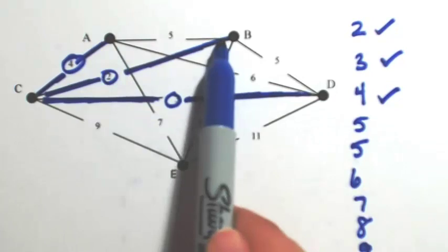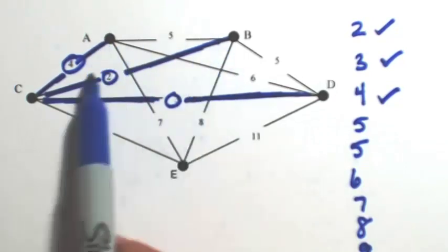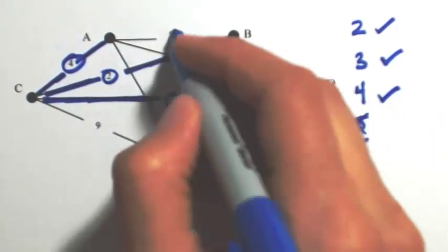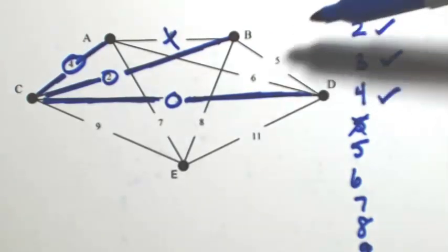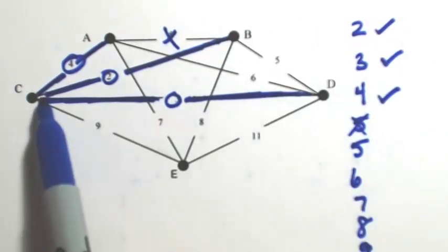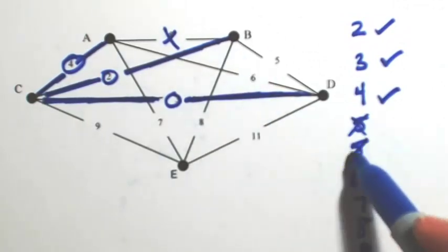We got a couple of 5s. If I use the 5 at the top, that's going to close out a circuit between A, B, and C. So I'm not going to use that. If I use the 5 between B and D, that's going to close out a circuit between C, B, and D. So I'm not going to use that.